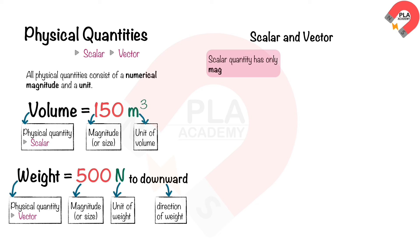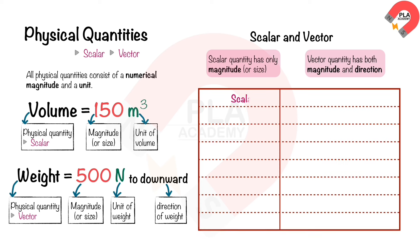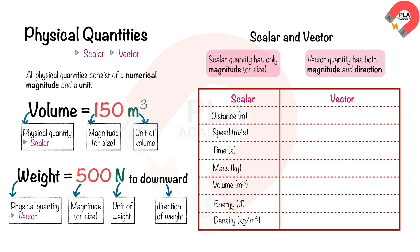A scalar quantity has only magnitude, or size, which is a numerical value. A vector quantity has both magnitude and direction. Some scalar quantities in physics include distance, speed, time, mass, volume, energy, and density.